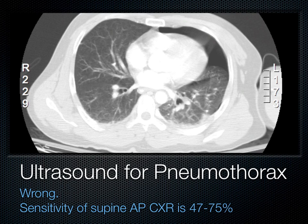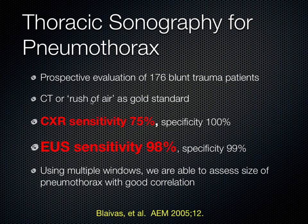In comparison, ultrasound appears to be significantly superior to chest X-ray for the supine population, which in the ICU is the majority of our patients. A prospective evaluation done in emergency literature using blunt trauma patients compared CT as the gold standard with ultrasound's ability to detect pneumothorax. Chest X-ray was 75% sensitive and 100% specific, while emergency ultrasound was 98% sensitive and 99% specific — far superior sensitivity. If you track the edges of the pneumothorax and find the lung point — the point at which the lung drops away from the wall — you can also estimate the size of the pneumothorax.